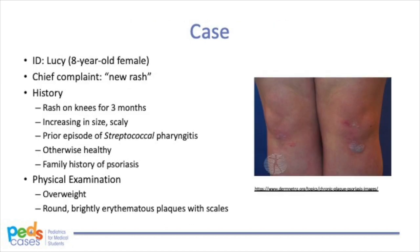First, we'd like to present a case. It is your day at an urban pediatric clinic as a fourth-year elective student. Your first patient is Lucy, an 8-year-old girl brought in by her mother for the concern of a newly developed rash. On history, Lucy has had the rash on her knees for about three months. The rash has gradually increased in size and has become quite scaly. When Lucy scratches, her mother also notices some bleeding. Before the development of the rash, Lucy had an episode of culture-proven group A streptococcal pharyngitis, which resolved with oral antibiotics.